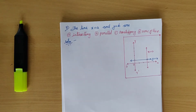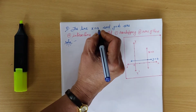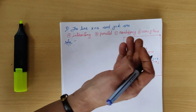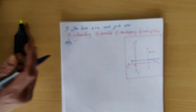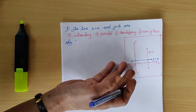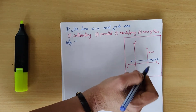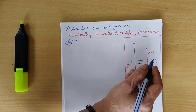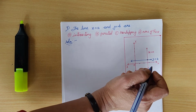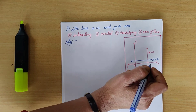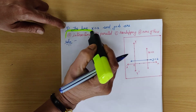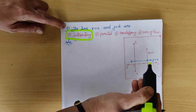Ninth question: the lines x = a and y = b are — intersecting, parallel, overlapping, or none of these? Plotting the graph, x = a is a vertical line and y = b is a horizontal line, and they intersect each other. So the answer is option A — intersecting.